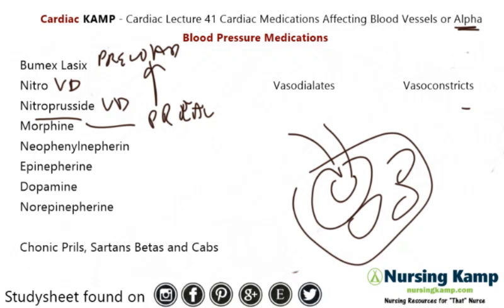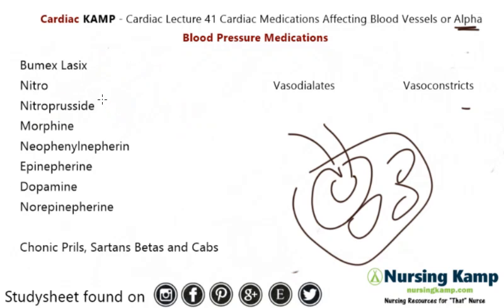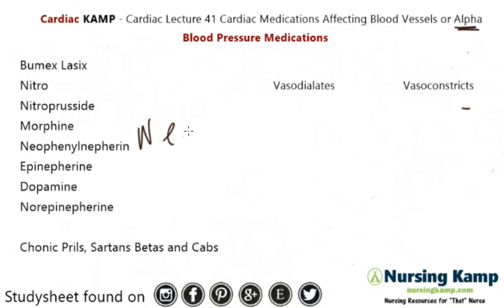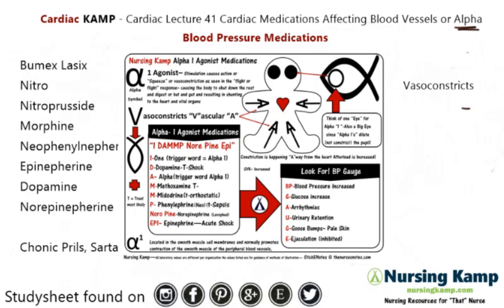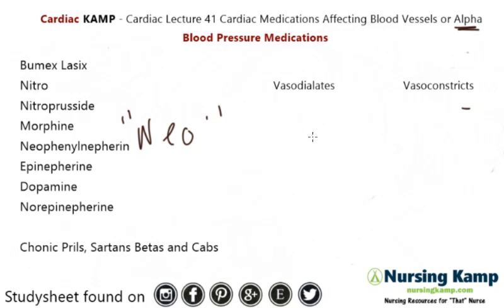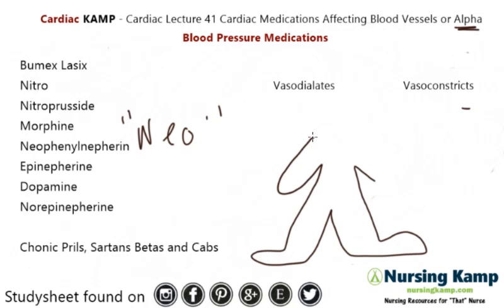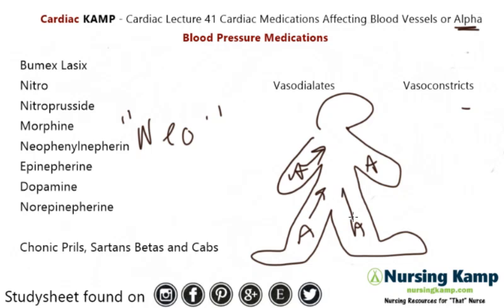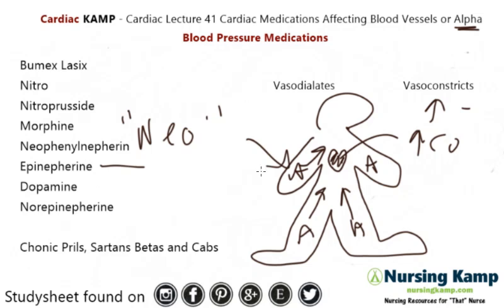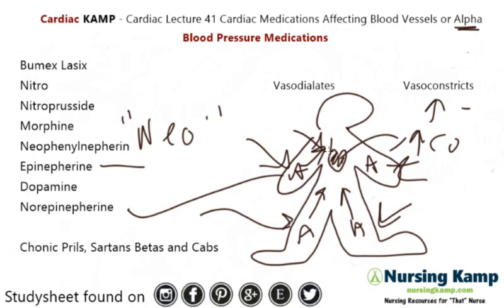Next is phenylephrine. Phenylephrine is strictly alpha. The big thing about alpha medications is that they squeeze — they squeeze the vasculature to force the fluid back to the heart so we can increase cardiac output. So it vasoconstricts. Epinephrine does the same thing, as well as Levophed — they constrict the vasculature. They also work on the heart, but we're mainly talking about alpha and how it affects blood pressure, and that's through constriction.